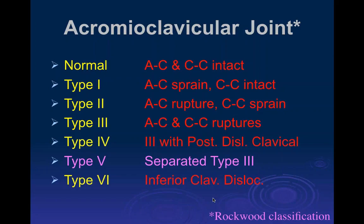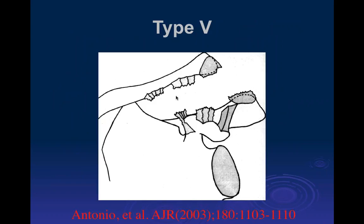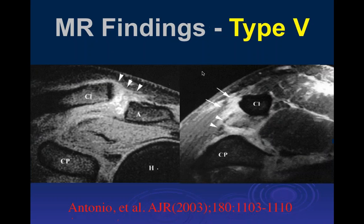Type 5 is essentially a severe Type 3, where you have tears of the CC and AC ligaments with inferiorly displaced acromion process relative to the clavicle. A Type 5 should be suspected when the superior margin of the acromion is inferiorly placed with respect to the inferior margin of the clavicle — meaning a centimeter or more of inferior displacement.